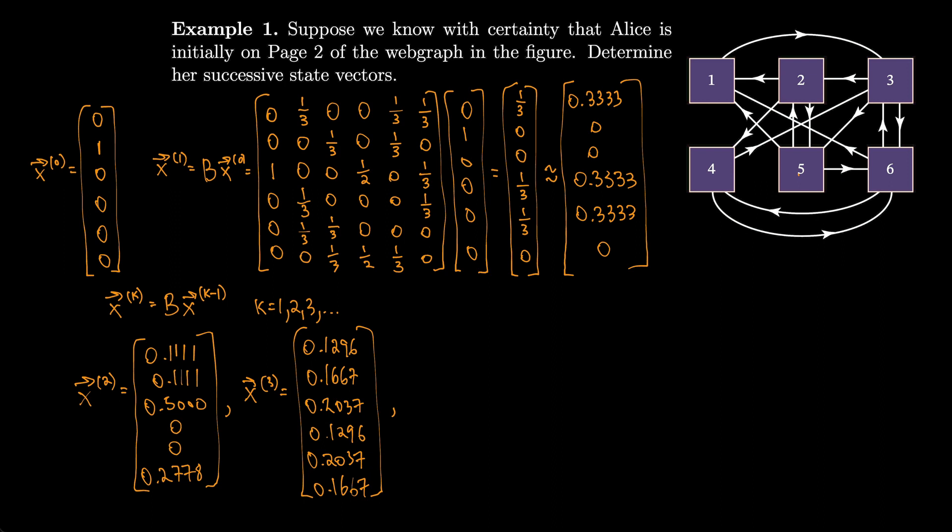Let's keep going to get x4 and x5. I'll just skip x4. Let's do x5. x5 is given by 0.1533, 0.1245, 0.3014, 0.1121, 0.1286, 0.1800. And if I multiply it by b five more times, I can get x10, which would be 0.1562, 0.1366, 0.2700, 0.1101, 0.1366, 0.1905.